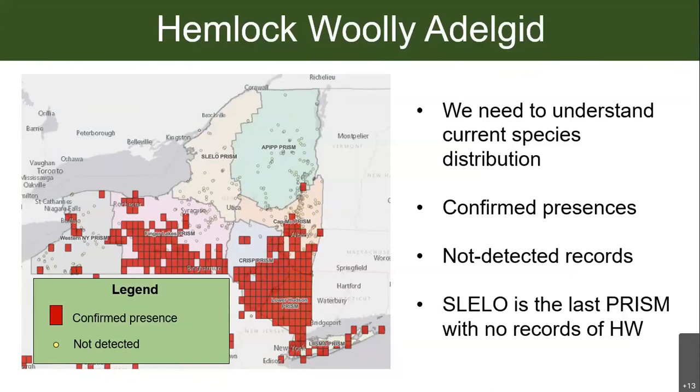SLILO PRISM is the one PRISM in New York that has no records of hemlock woolly adelgid — that's awesome, and we want to keep it that way. So we really need to keep surveying for this invasive species to track its spread. Those red boxes are where hemlock woolly adelgid has been found, and you may also be able to see some yellow dots — those are areas where people have surveyed for hemlock woolly adelgid and did not find it.